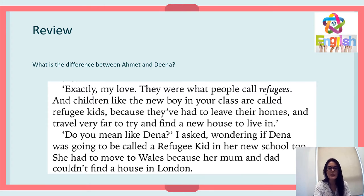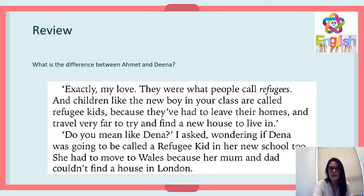Let's have a look at this section where the narrator is asking about what a refugee is. 'Exactly, my love. They were what people call refugees, and children like the new boy in your class are called refugee kids because they've had to leave their homes and travel very far to try and find a new house to live in.' 'Do you mean like Dina?' I asked, wondering if Dina was going to be called a refugee kid in her new school too. 'She had to move to Wales because her mum and dad couldn't find a house in London.' So we've got two interesting things going on here — both children have had to move house, but for different reasons.